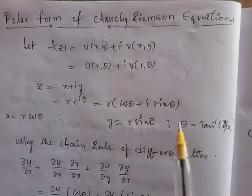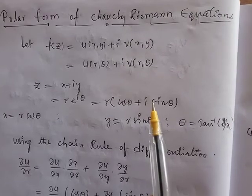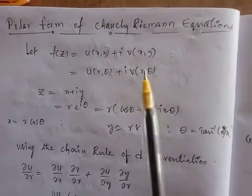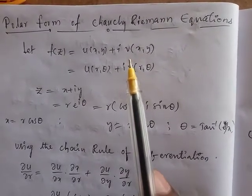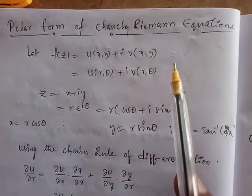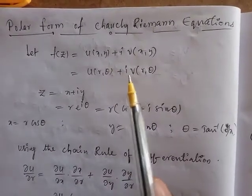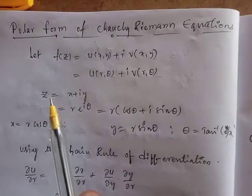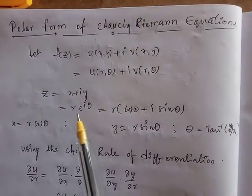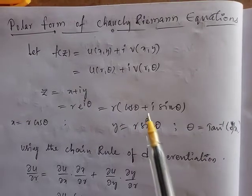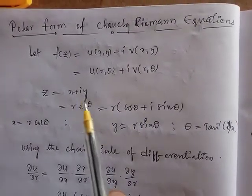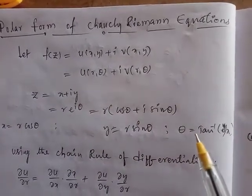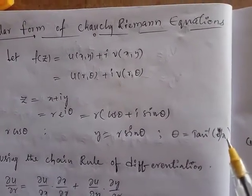Now we discuss the polar form of Cauchy-Riemann equations. We previously discussed the Cauchy-Riemann equations in Cartesian form. Now we discuss the polar form. Let f(z) = u + iv, where u is a function of x, y and v is a function of x, y. We let u be a function of r, θ and v be a function of r, θ, where r is the radius and θ is the argument. So z = x + iy, and in polar form z = r·e^(iθ). By Euler's formula, e^(iθ) = cosθ + i·sinθ. Comparing real and imaginary parts: x = r·cosθ, y = r·sinθ, and the argument θ = tan⁻¹(y/x).